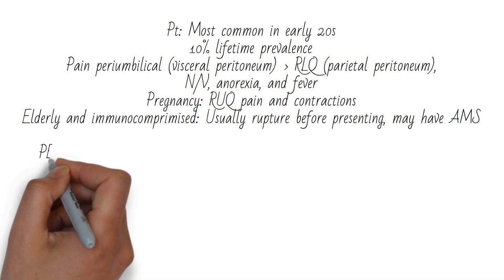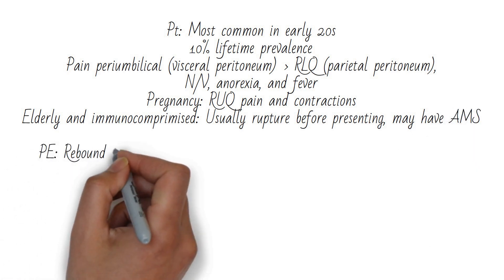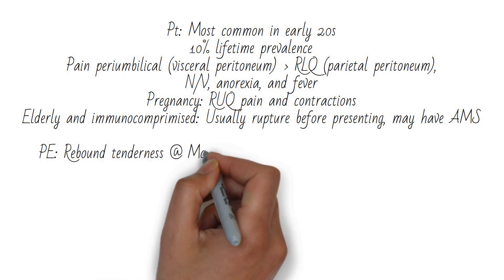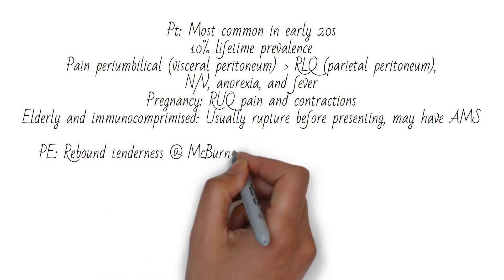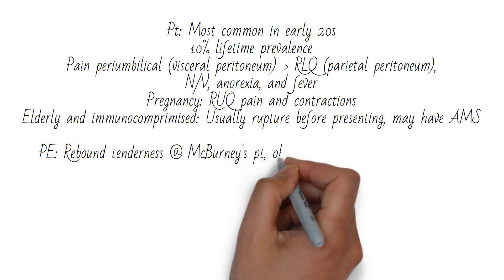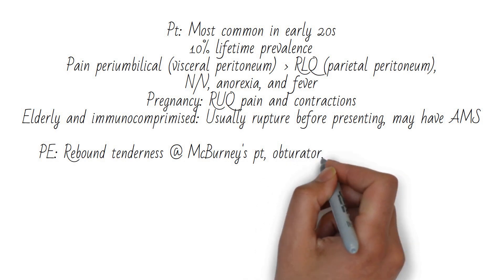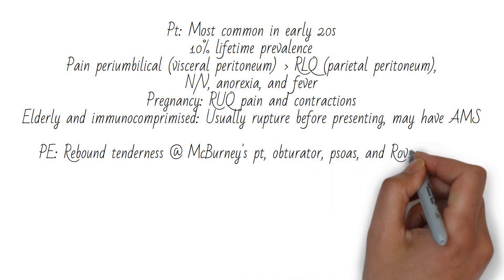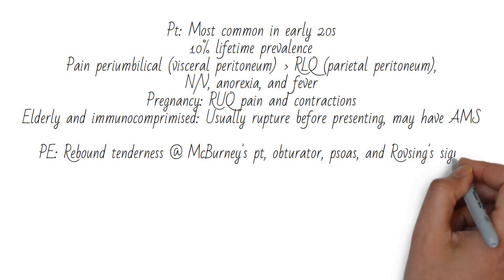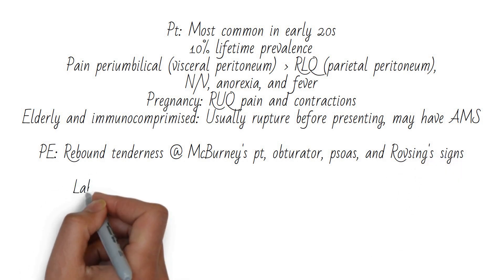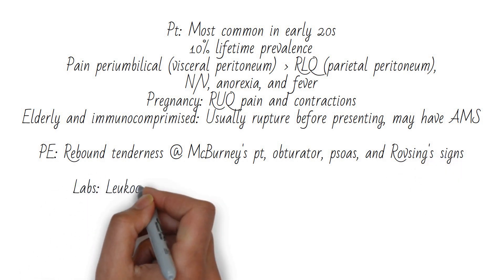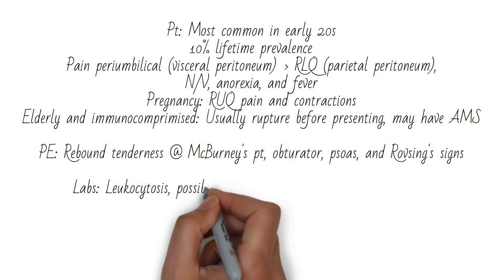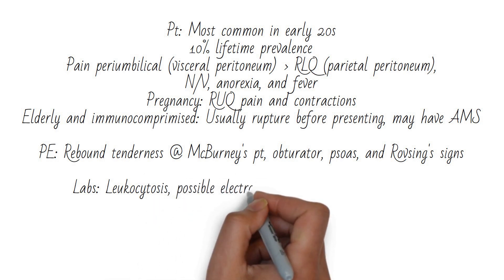On physical exam, the patient will have rebound tenderness over McBurney's point, which is one-third of the way between the ASIS and the umbilicus. They will also potentially have obturator, psoas, and Rovsing signs. Labs will show leukocytosis, and a possible hypochloremic metabolic alkalosis and hypokalemia from vomiting and contraction alkalosis.